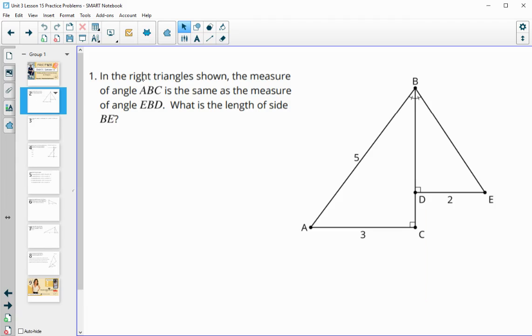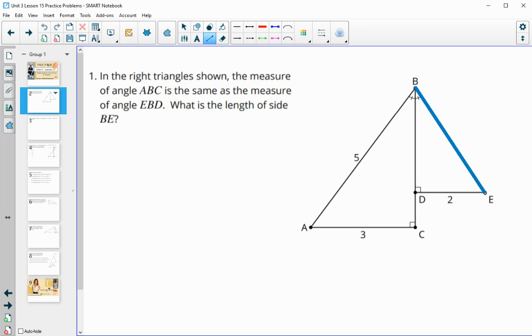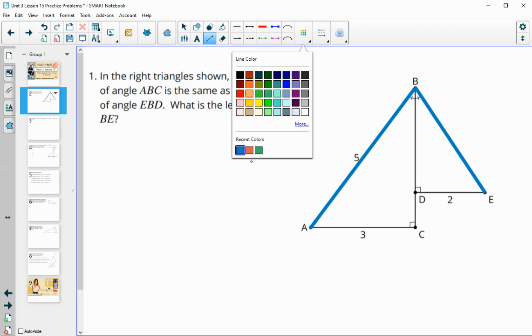Number one tells us that we've got two right triangles shown and then that the measure of angle ABC, this one right here, is the same as the measure of EBD, this one here. And we can see that they marked that as well.